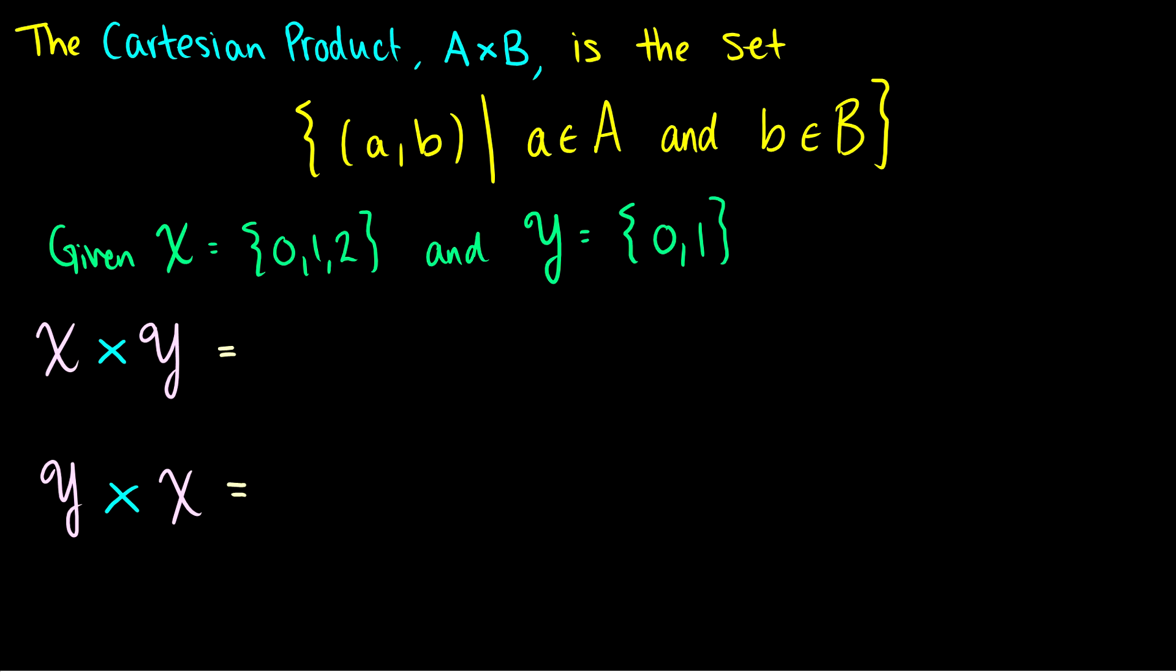But really, when we talk about these ordered pairs and the Cartesian products, we usually talk about something called the cross product, or the Cartesian product, A×B, and it is a set as well. But it's a set of ordered pairs. And you can imagine if we didn't have ordered pairs, these sets would consist of many, many smaller sets, and it would be very difficult to read.